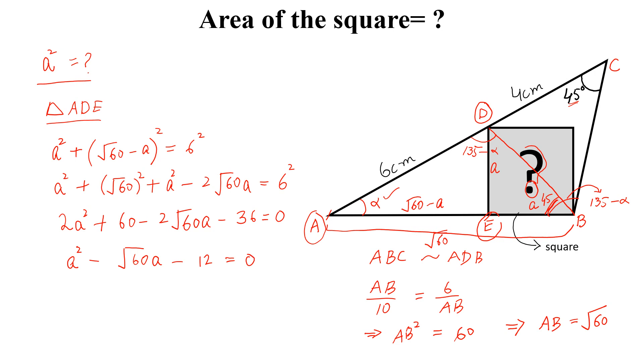And this is a quadratic equation. If we solve this by quadratic formula, we get square root of 3 into square root of 5 plus minus 1.